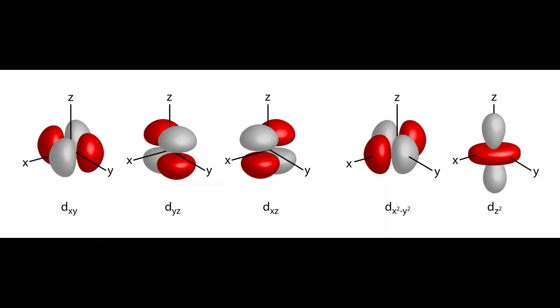Moving on to d orbitals. These come into play starting at the third energy level and are even more complex, with shapes like cloverleafs. There are five d orbitals, and they can hold up to ten electrons in total. d orbitals are especially important for transition metals and play a big role in their chemical properties.